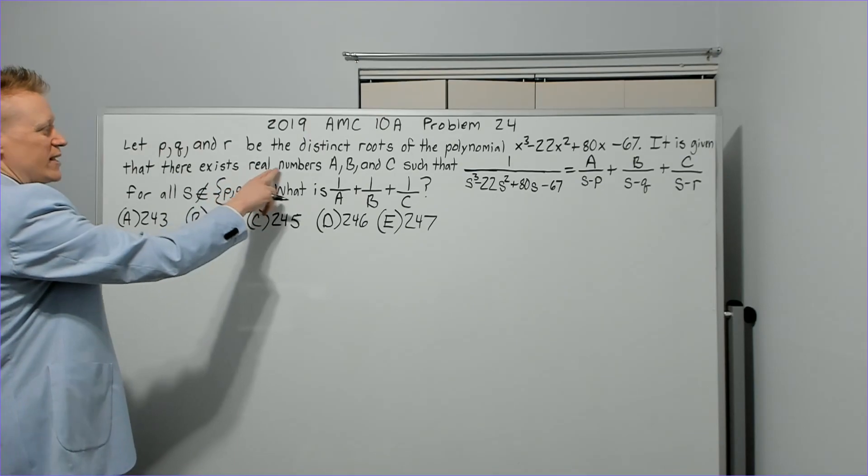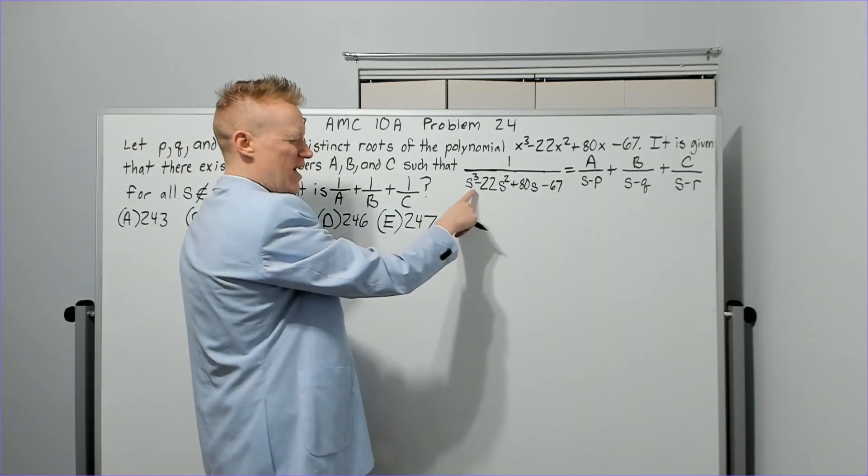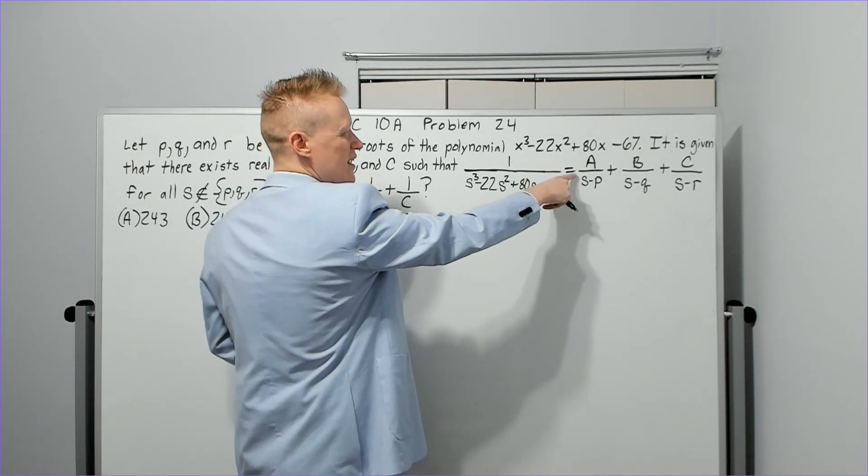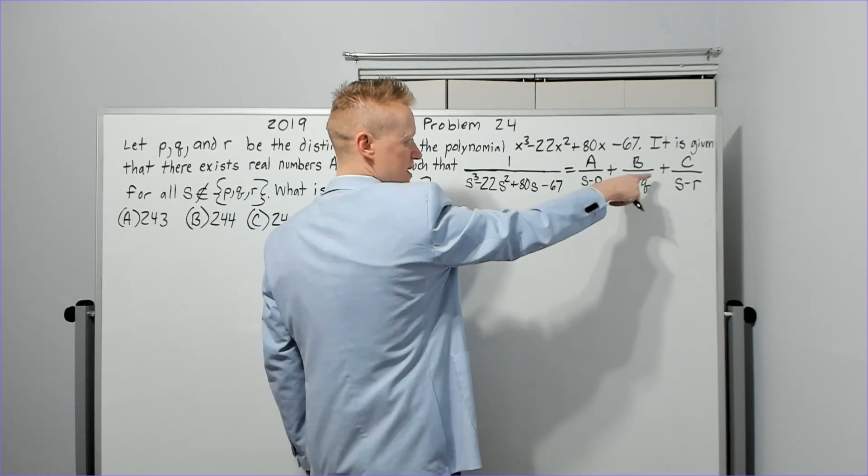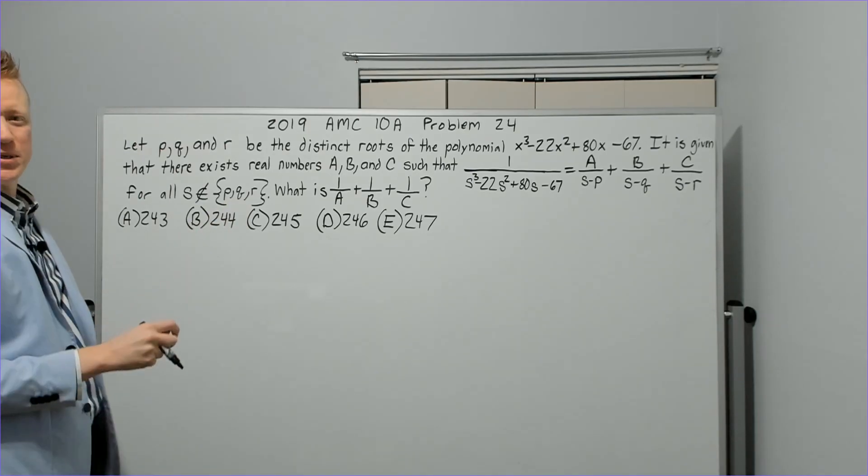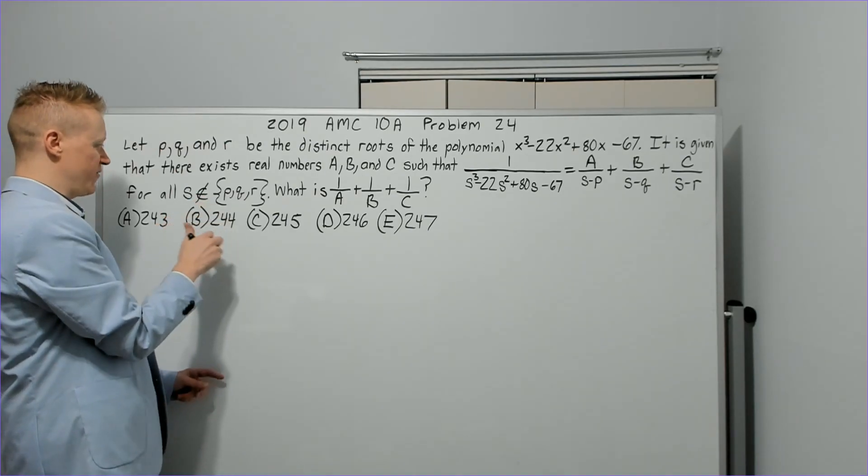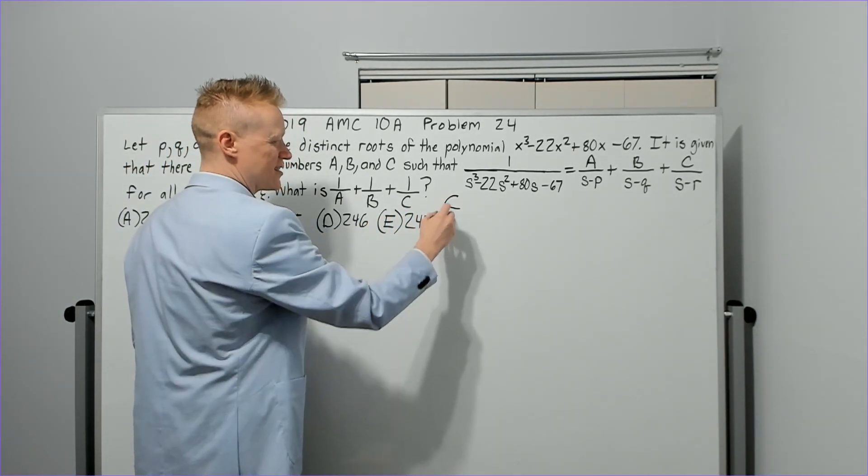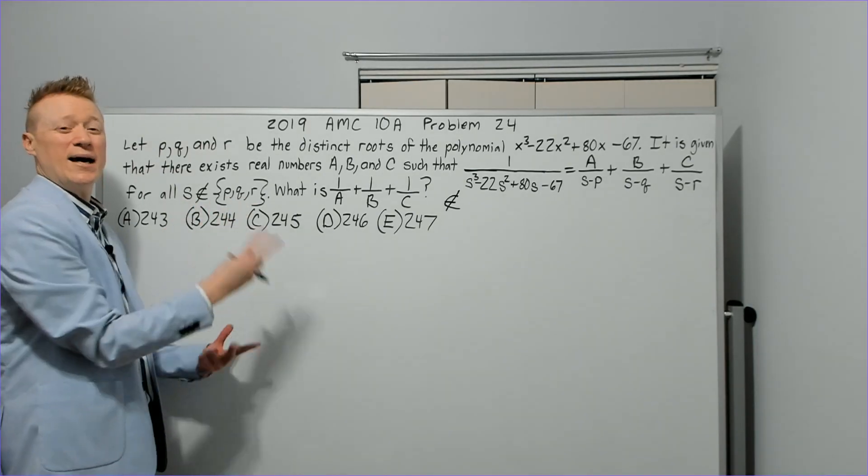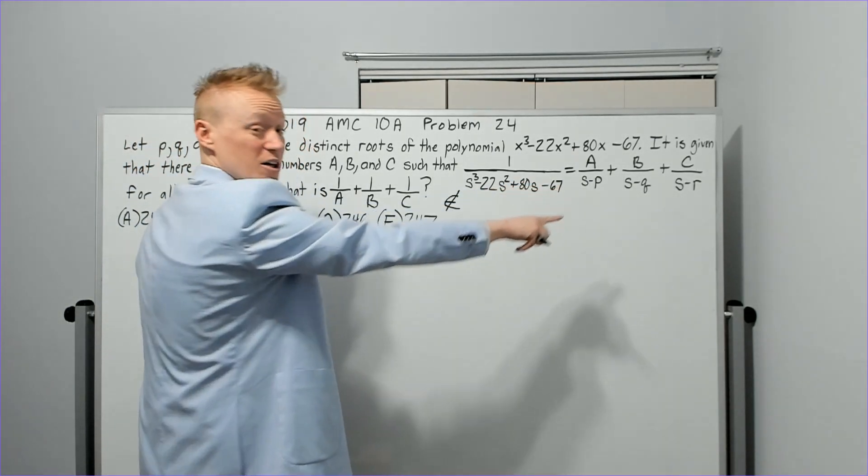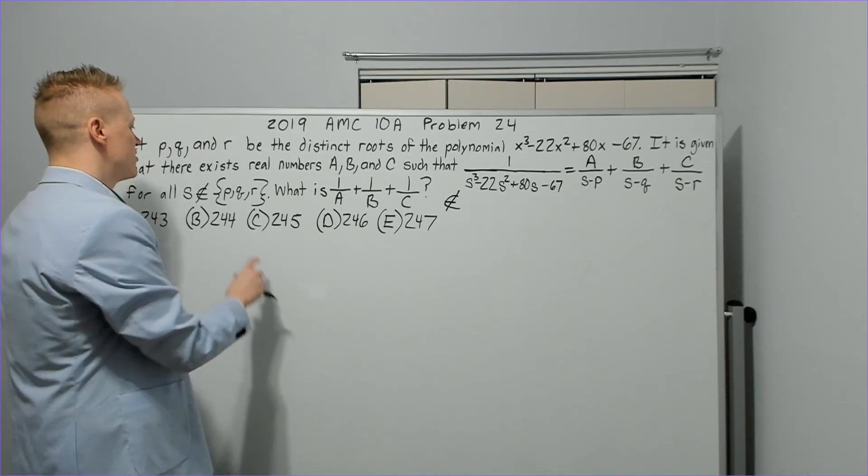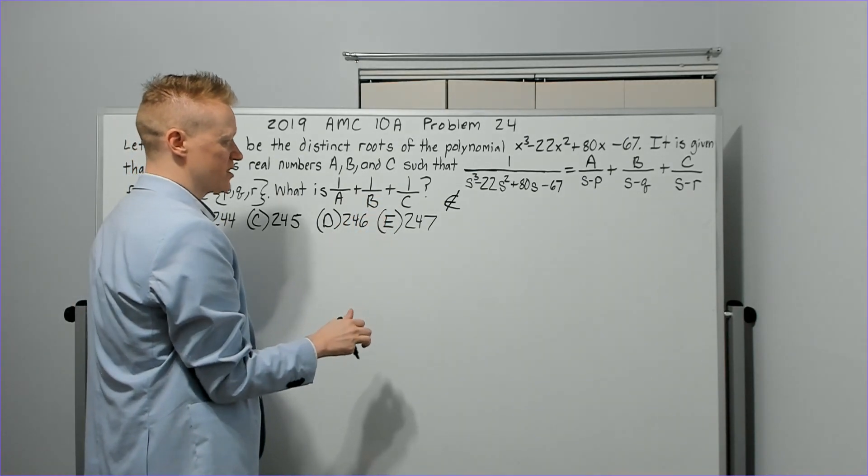It is given that there exists real numbers A, B, and C such that 1 over, and now they've switched it to s, so we have 1 over s cubed minus 22s squared plus 80s minus 67, the same thing, equal to A over s minus P plus B over this plus C over that for all s that is not an element of the set P, Q, and R. Why? You could ask that. What does this mean? First off, an element of is this symbol that looks like a C kind of, and then it gets changed into an E. If they put a slash through it, it means it's not an element of. So why would they tell us this? What would happen if it was equal to P? Well, you can see you're going to get zero, and because these P, Q, and R are roots, this would be 1 over 0 as well, and we can't have zeros in the denominator. That's not allowed. So that's why this is here. What is 1 over A plus 1 over B plus 1 over C?